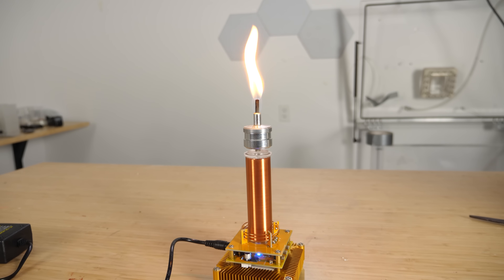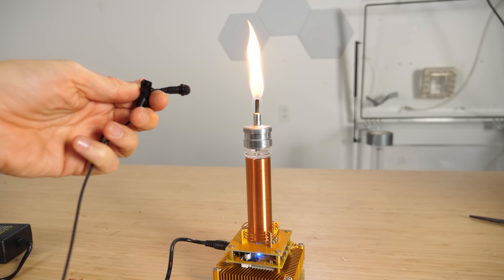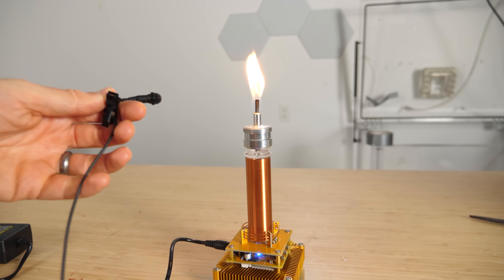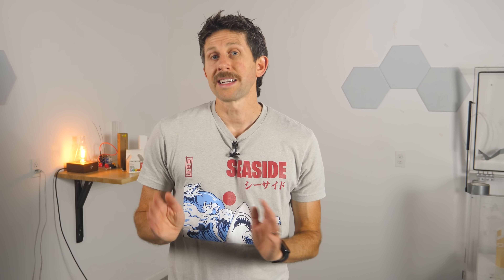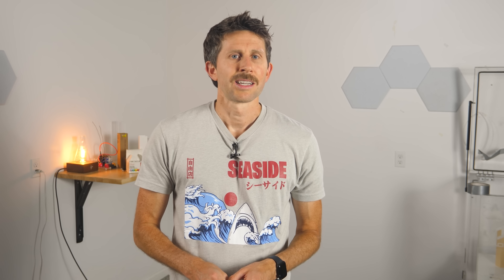Now inside this specific Tesla coil is an interrupter circuit. This interrupter rapidly turns the high voltage output on and off thousands of times per second. When I feed it an audio signal through an input cable or even Bluetooth, it modulates the pulse rate of the coil to match the frequencies of the music. So the Tesla coil is now pulsing the flame at the same rhythm and pitch as the audio signal. The heating and cooling of the air around the flame happen at those exact frequencies, creating pressure waves in the air that we perceive as sound.